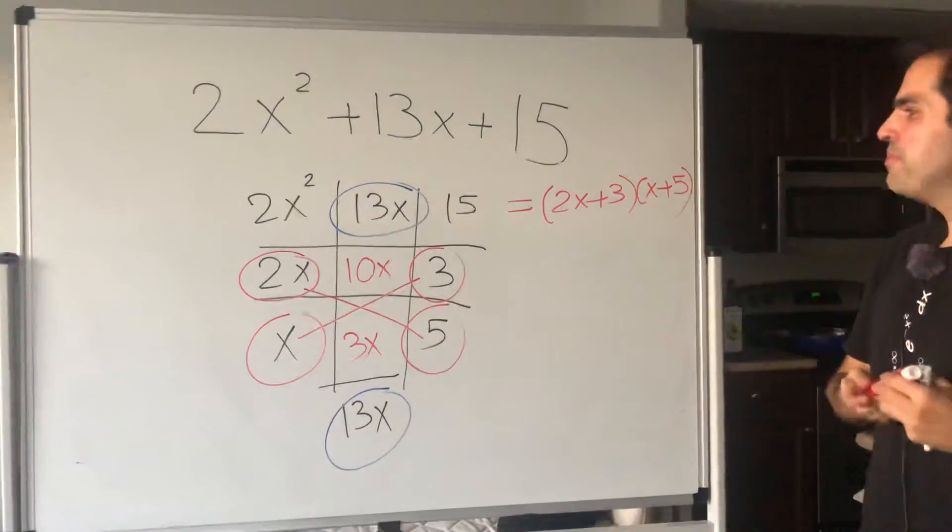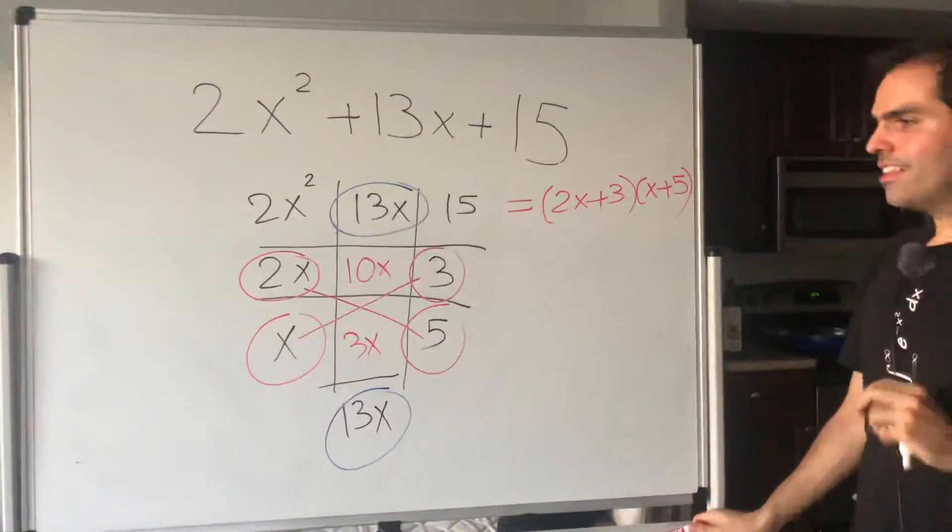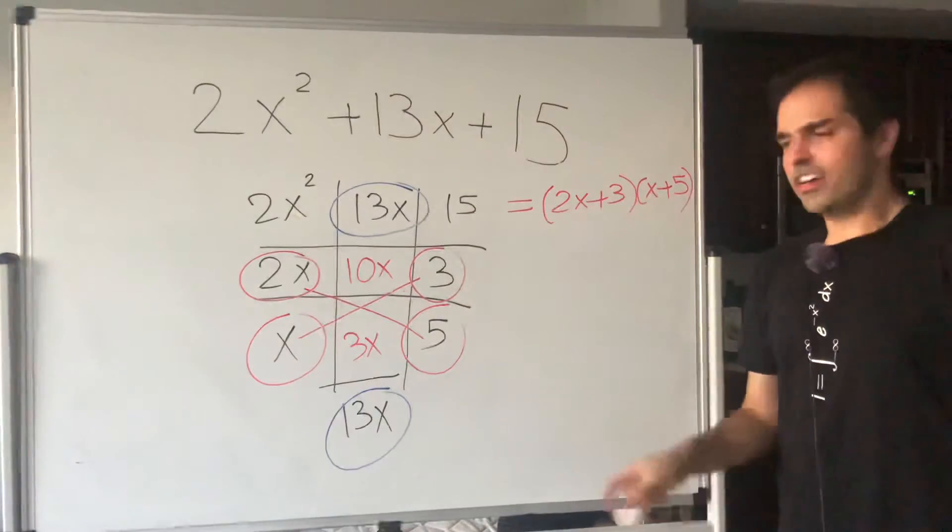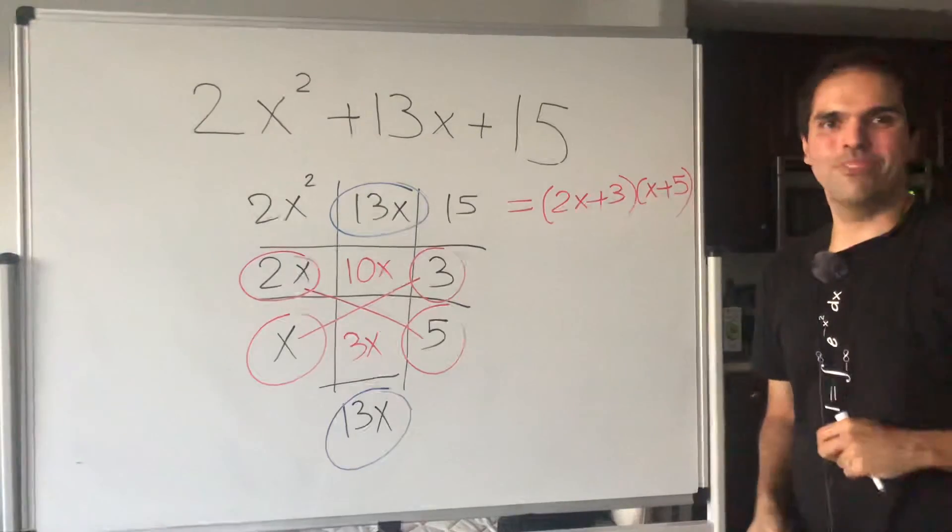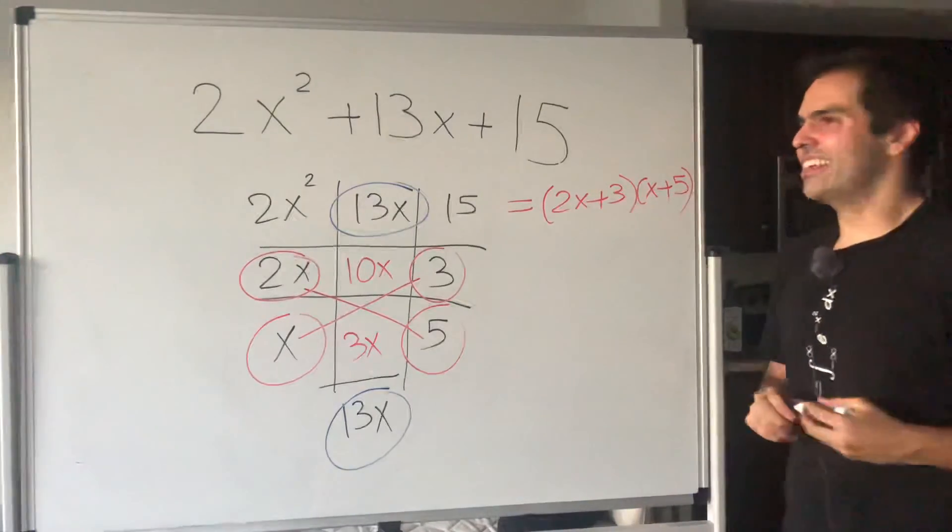2x plus 3 times x plus 5. And what if you had the wrong guess? What if you put 5 and 3 here? No problem. Just do the tic-tac-toe table again until you have the correct guess.